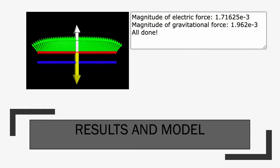And now we have the model and result that was created from the computational model. As you can see, the magnitude of electric force is 1.71625 times 10 to the negative 3rd Newtons. The magnitude of gravitational force is 1.962 times 10 to the negative 3rd Newtons.